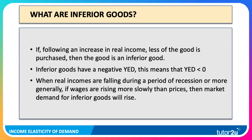Now, inferior goods are what we're going to focus on in this video. If following an increase in real income less of the product is bought, then we have an inferior good — they have a negative income elasticity of demand. During periods of recession when incomes are falling, the market demand for inferior goods can go up.